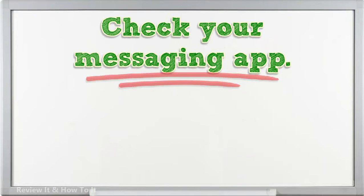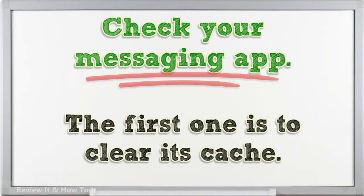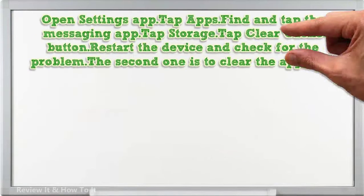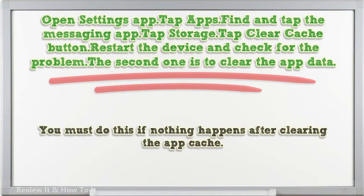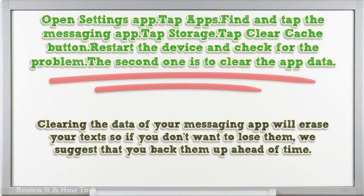Check your messaging app. There are two troubleshooting steps you can try. The first one is to clear its cache. Doing so will only delete the temporary set of files called cache being used by the app. Open Settings > Apps > find and tap the messaging app > tap Storage > tap Clear Cache > restart the device and check for the problem. The second one is to clear the app data — do this if nothing happens after clearing the app cache. Clearing the data of your messaging app will erase your texts, so back them up ahead of time.